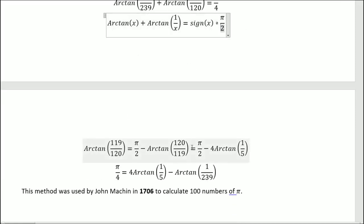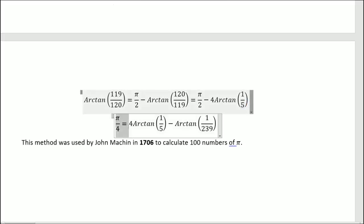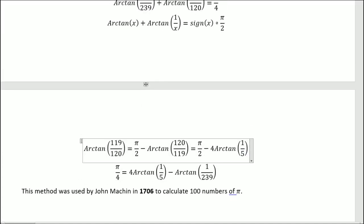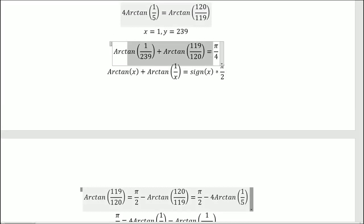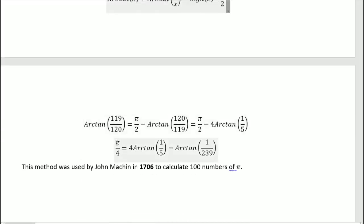And then this can be replaced with 4 arctangent 1 over 5. So we know that this is equal to pi over 2 minus 4 times arctangent 1 over 5. So we take this and replace it in here. And then we get that pi over 4 is equal to 4 times arctangent 1 over 5 minus arctangent 1 over 239.